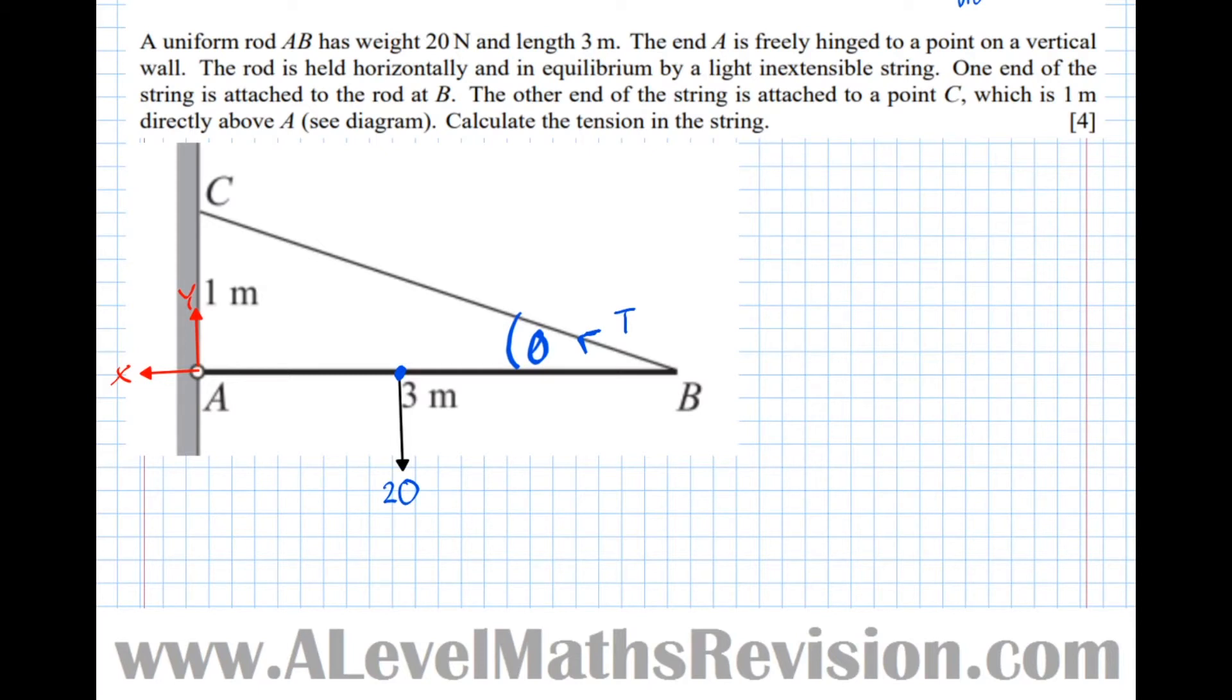And if I'm wrong about which direction X is acting in, i.e. if X is actually pushing the rod out of the wall, then I'll simply get a negative value for X. So it's fair game to just guess which direction these two forces are in. And if I'm wrong, I'll get negative numbers and they'll be acting in the other direction. Simple as that. So don't be shy to guess.